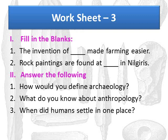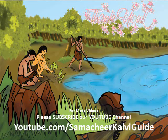Now it is time for the worksheet. Worksheet Number 3, Part 1 — Fill in the blanks: Question 1: The invention of dash made farming easier. Question 2: Rock paintings are found at dash in Nilgiris. Part 2 — Answer the following: Question 1: How would you define archaeology? Question 2: What do you know about anthropology? Question 3: When did humans settle in one place? With that we wind up today's session. Thank you for watching. Please subscribe to our YouTube channel: youtube.com/SambachirKalviGuide. Thank you.